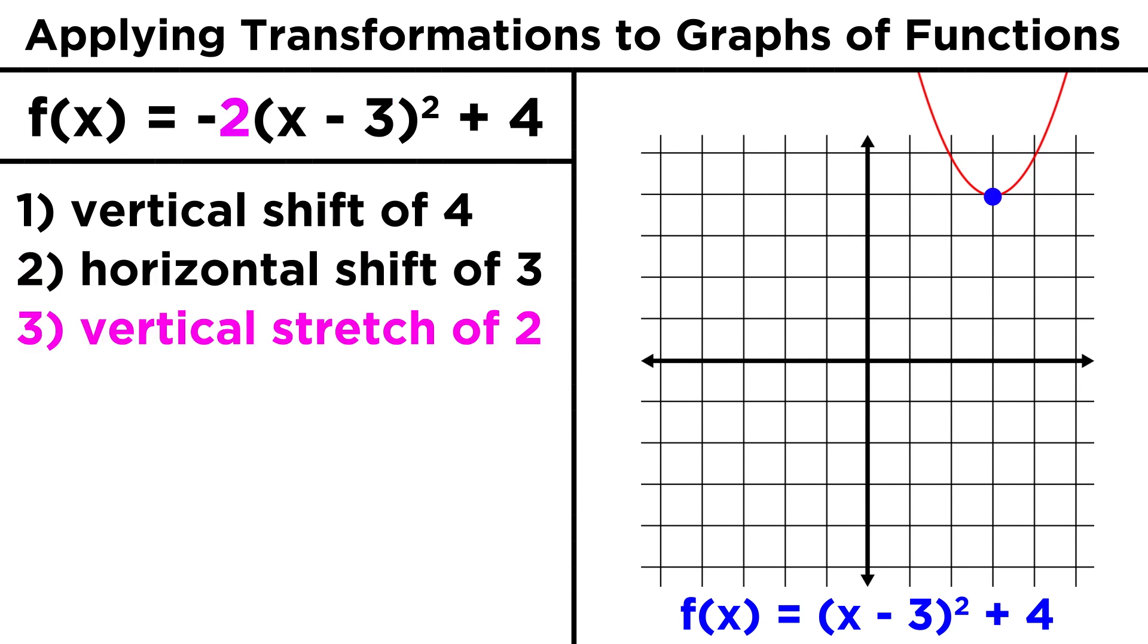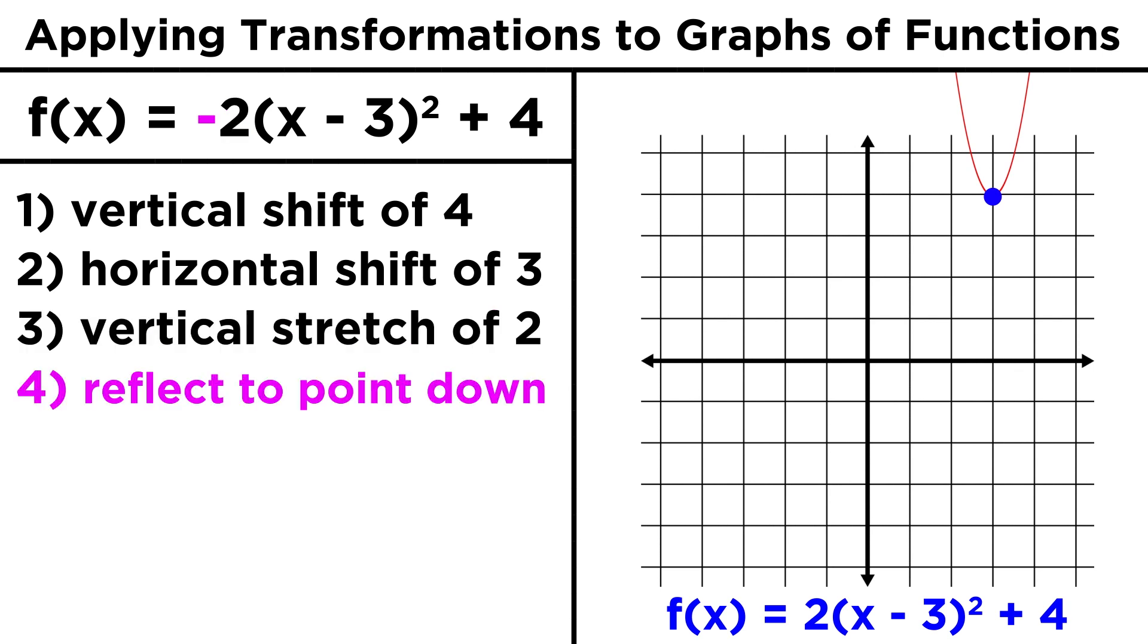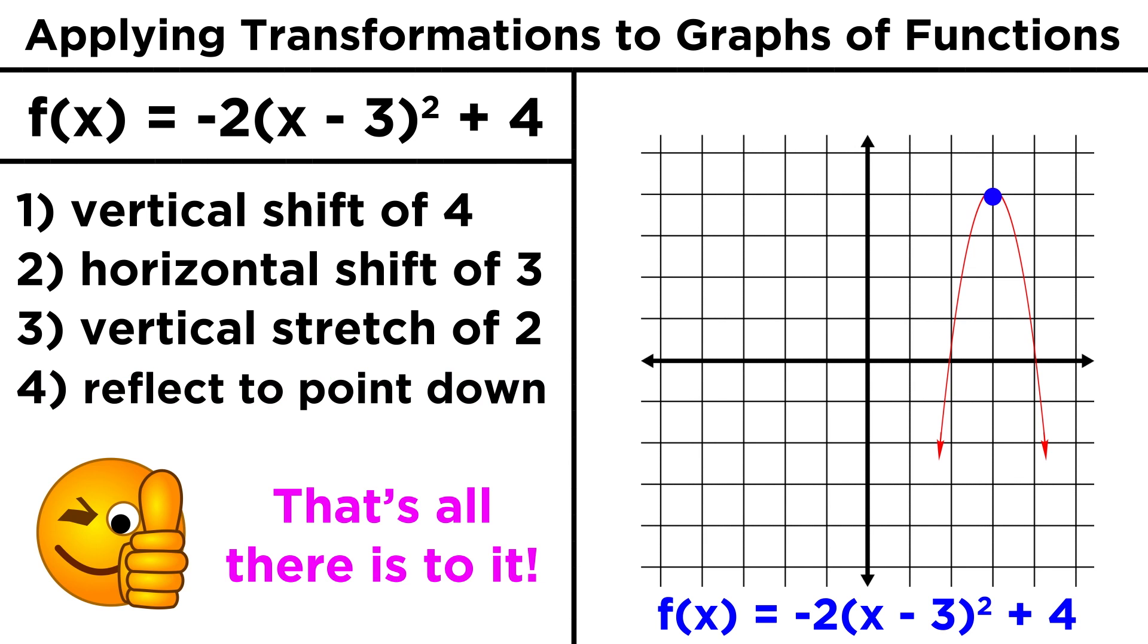Next, we have a two here. That means we can stretch this out by a factor of two. And lastly, there is a negative sign here, so we can reflect this so that it points downwards instead of upwards. And that's all there is to it.